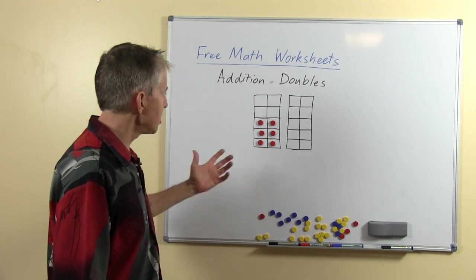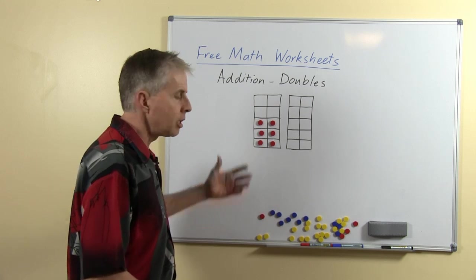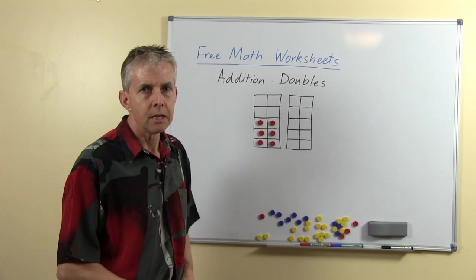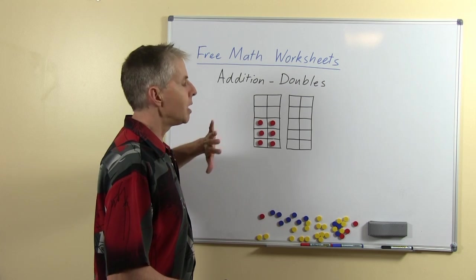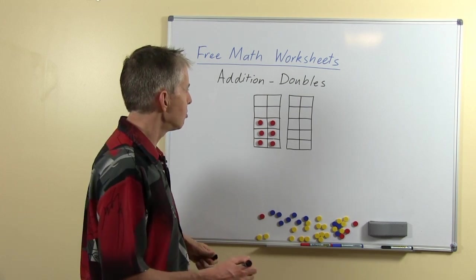We're going to start with the 10 frame and this of course is showing an example of double three. We want the students to use the 10 frame to see by looking at it that double three is equal to six.